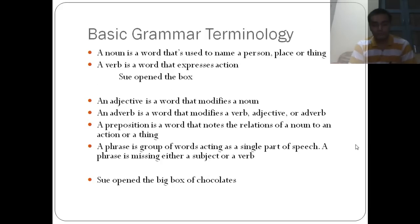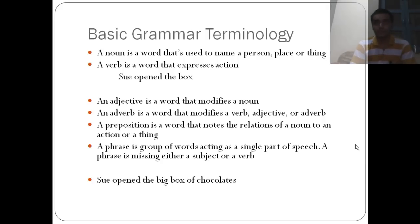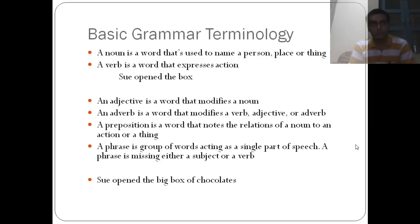To start this series and be able to do level-one questions, we just need to learn a little bit of grammar. A noun is a word used to name a person, place, or thing. A verb is a word that expresses action — for example, 'Sue open the box': 'Sue' and 'box' are nouns, 'open' is the verb. An adjective modifies a noun or describes its properties. An adverb modifies a verb, adjective, or another adverb. A preposition notes the relation of a noun to an action.